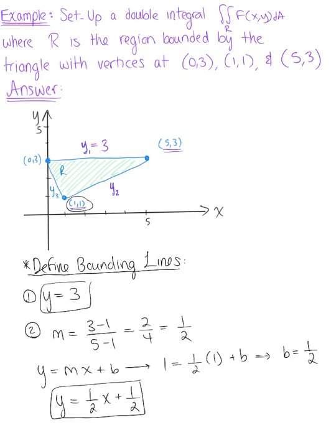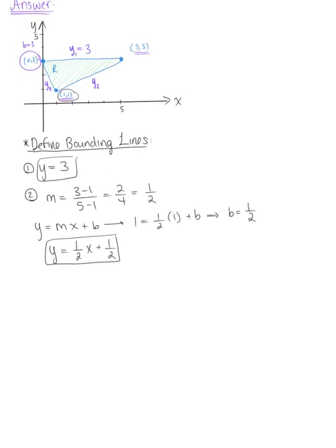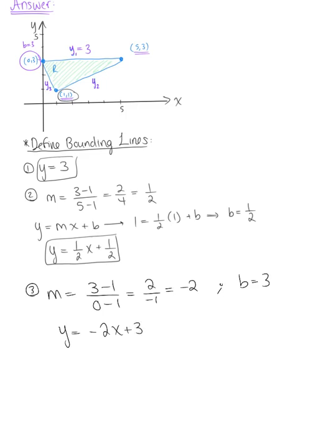Last but not least, we find the equation for our third bounding line y₃. This line intersects the y-axis, so b = 3. The slope is (3−1)/(0−1) = −2. Since we have a y-intercept at 3, our third bounding line y₃ is defined as y = −2x + 3.